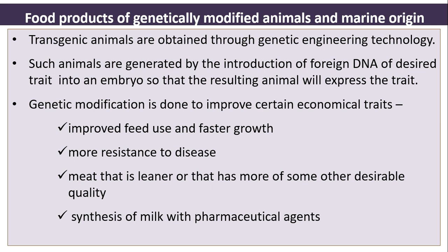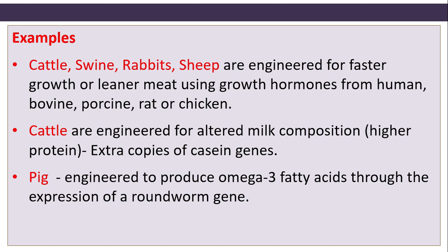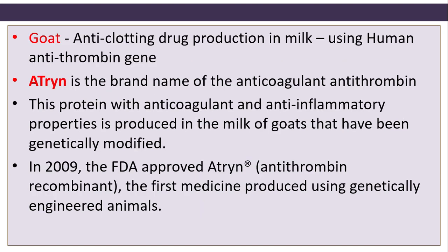Examples include: cattle, swine, rabbits, and sheep engineered for faster growth or leaner meat using growth hormones. Cattle are engineered for altered milk composition — extra copies of calcium enzyme genes are inserted to produce higher protein-rich milk. Pigs are engineered to produce omega-3 fatty acids through expression of a roundworm gene. Goats produce anti-clotting drug antithrombin in their milk using the human antithrombin gene.